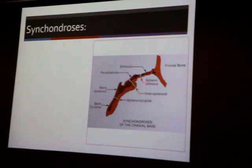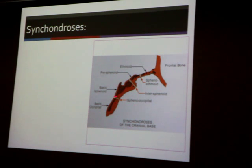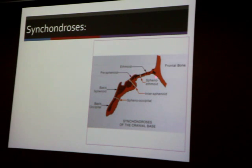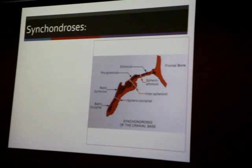There are several synchondroses. The sphenoethmoidal synchondrosis is here, and the intersphenoid, and the most important one is the sphenooccipital synchondrosis because it's the last one to fuse. It makes the cranial base — especially the posterior and middle cranial base — elongate between the sella point and the basion point. The elongation happening because of the sphenooccipital synchondrosis expansion explains the growth in orthodontic landmarks.